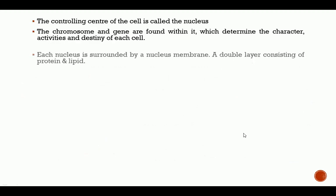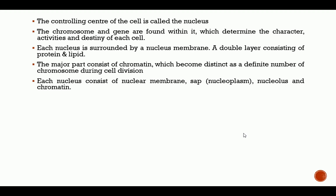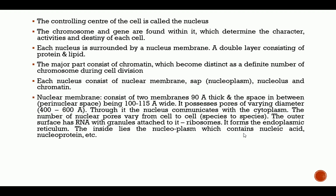Each nucleus consists of a nuclear membrane, nucleoplasm, nucleolus, and chromatin. The nuclear membrane consists of two membranes which are 90 Ångströms thick and the space between them is about 100 to 115 Ångströms wide. This nuclear membrane has pores of varying diameter, 400 to 600 Ångströms wide. Through these pores the nucleus communicates with the cytoplasm, telling cytoplasmic organelles what to do, such as directing sites of protein synthesis.